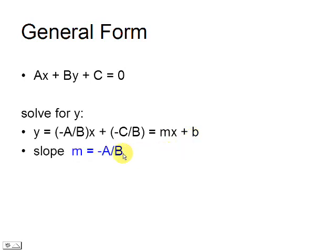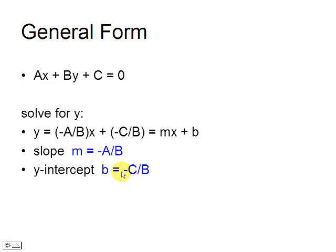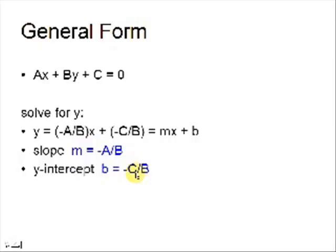The slope is the negative coefficient of x divided by the coefficient of y, that is -A/B. The y-intercept is the negative constant divided by the coefficient of y, that is -C/B. With the general form, we can easily find the slope of a line and its y-intercept.